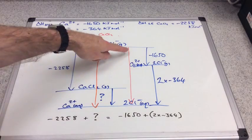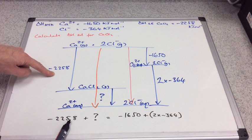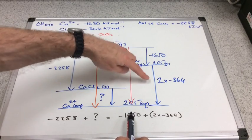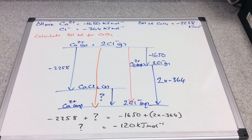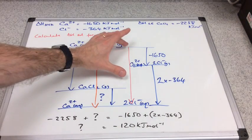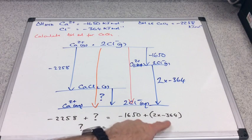Applying Hess's law, we have two routes — orange and red — with common start and finish points. The orange route gives: minus 2258 plus the unknown equals the sum of the hydration enthalpies, remembering to double the chloride value. Rearranging and solving gives minus 120 kilojoules per mole. If in the exam you drew the cycle the other way, you'd still get the same answer because the arithmetic is identical.